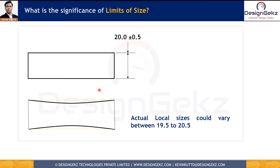Let's begin by understanding what limits of size and local size are. Limits of size are two limits within which an actual local size is allowed to vary and still be functionally acceptable. For example, with 20 ±0.5, the two limits of size are 19.5 and 20.5, and this part is allowed to vary between 19.5 and 20.5 and still be functionally acceptable.